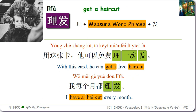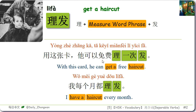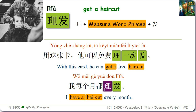理发 means get a haircut and can also contain a measure word phrase. For example: 用这张卡，他可以免费理一次发 — With this card, he can get a free haircut. 我每个月都理发 — I have a haircut every month.